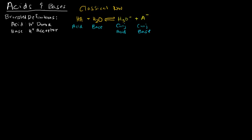Another way to depict this is to omit the water and simply write HA dissociating into H+ and an anion A-. The acid becomes the conjugate base and the base becomes the conjugate acid. We're omitting the base and just considering the acid as dissociating in water — water is still implicitly present.